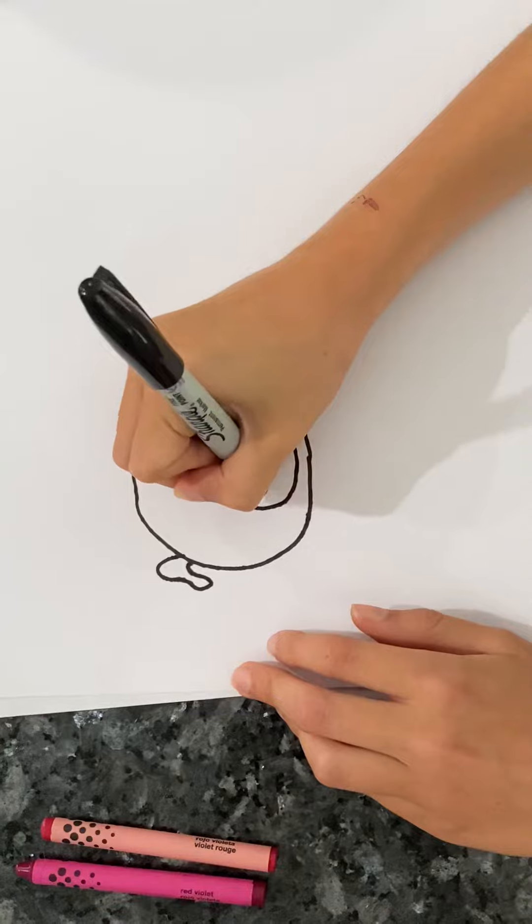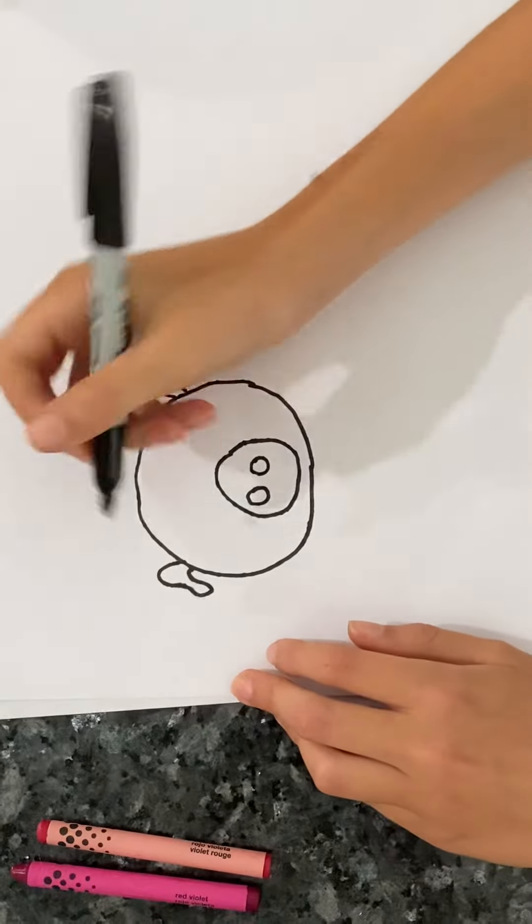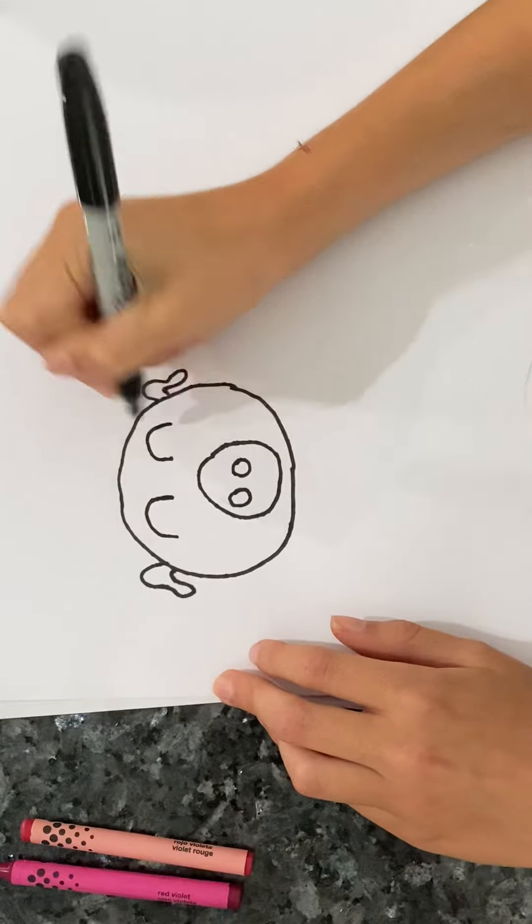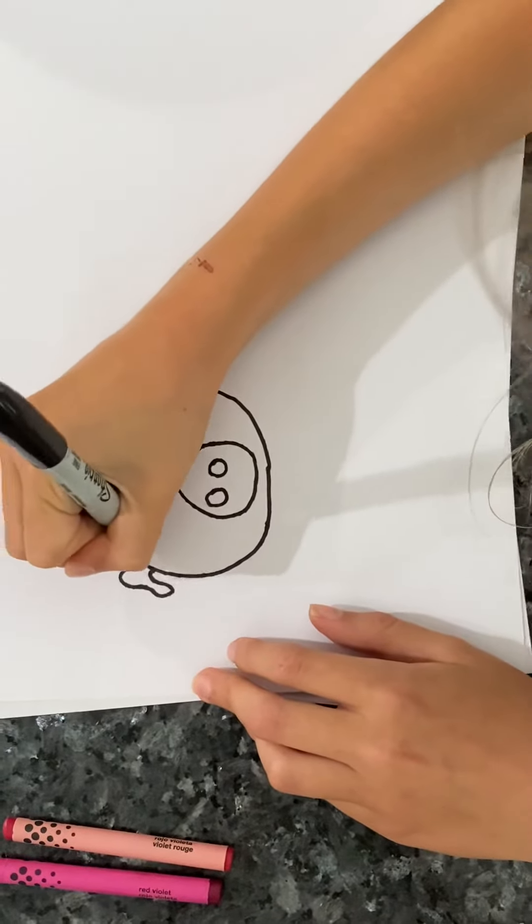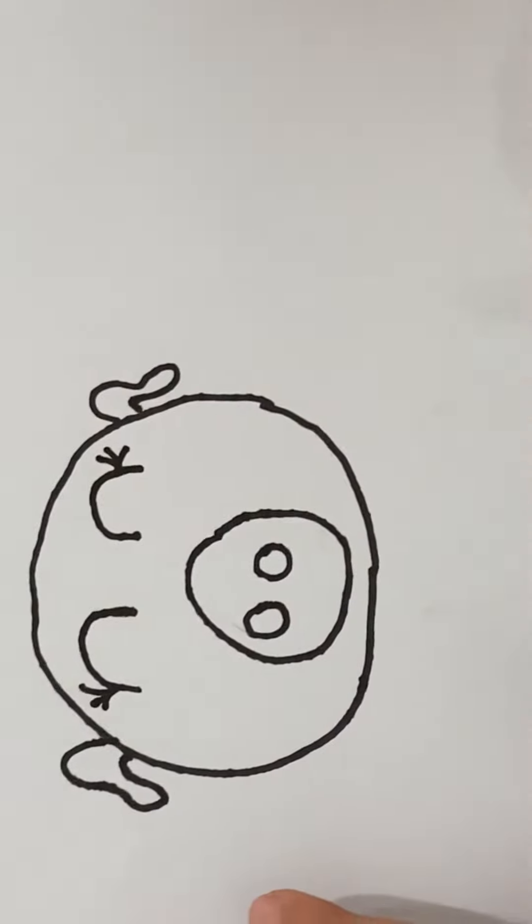Now we're gonna draw two circles in there. Those are going to be the nostrils for the pig. Now let's draw its eyelashes. Not eyelashes, eyes. We will be drawing eyelashes too, right over here. Mine is a girl pig. Yours can be a boy pig. You don't have to draw eyelashes but I am going to.